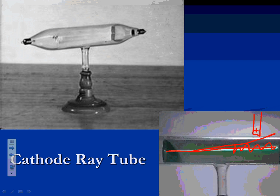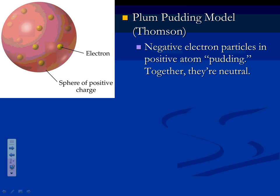Thompson also found that electrons are much smaller than atoms, so they have to be inside atoms. He came up with the plum pudding model. You might want to copy it down because it's important in the history of chemistry. Thompson knew there were atoms and electrons. Since electrons are negative, there has to be a positive part to balance it out — because atoms are neutral overall. So he pictured electrons embedded in a pudding of positive charge. He discovered the electrons and made a model with them, even though he didn't know what the rest was made of.